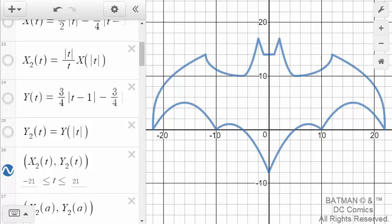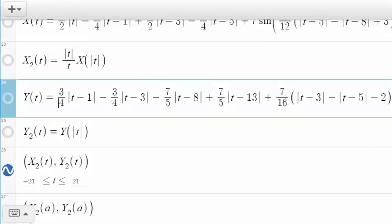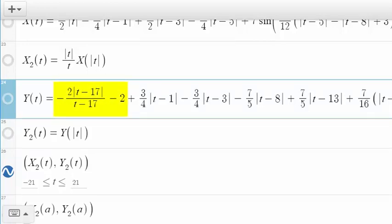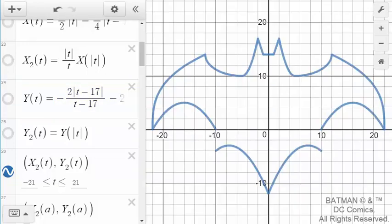So back here in Desmos, either at the end of the y of t equation, or I can just put it here in the beginning. If I put negative two absolute value t minus 17 over quantity t minus 17 minus 2 added to the rest of that equation, there you have it. The tail has been moved down four units.